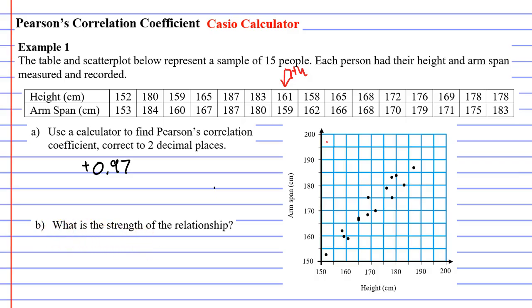So for question B, what is the strength of the relationship, we can say that it's a strong relationship or to emphasize this, we could say it's a very strong relationship because it's almost perfect, but not quite.